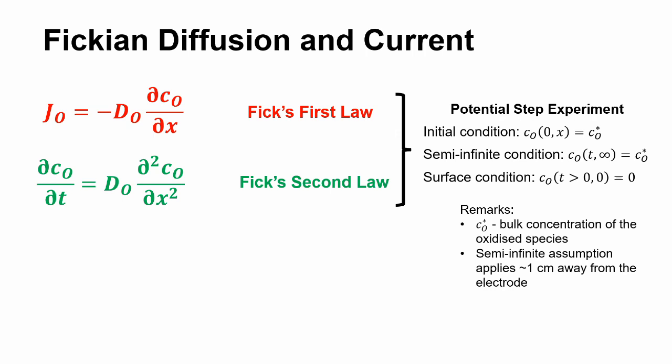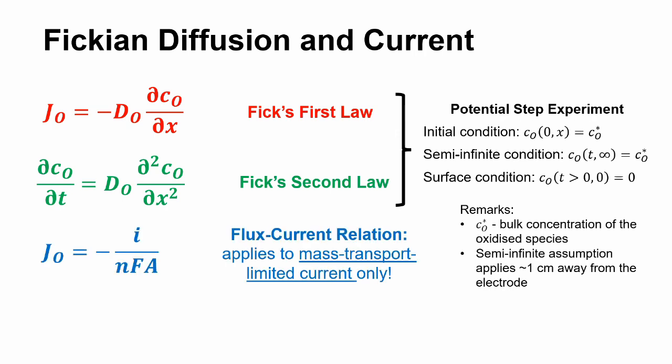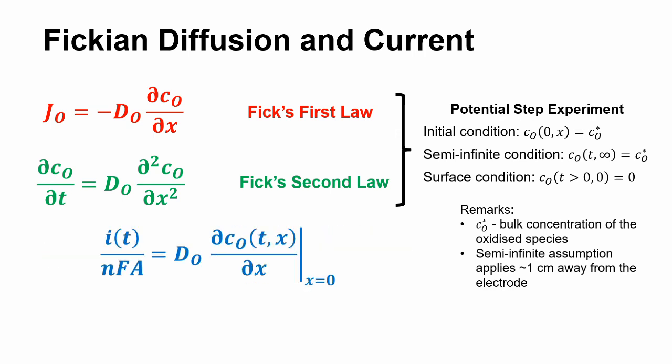Thus, current can be related to the flux and, as a result, the concentration gradient, so a model of how current changes with time under diffusion limitations can be derived.